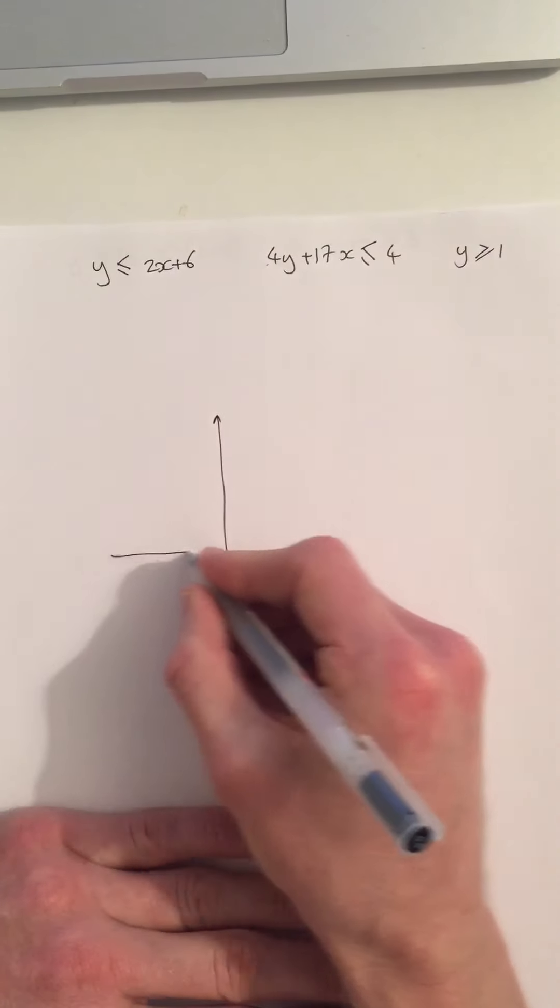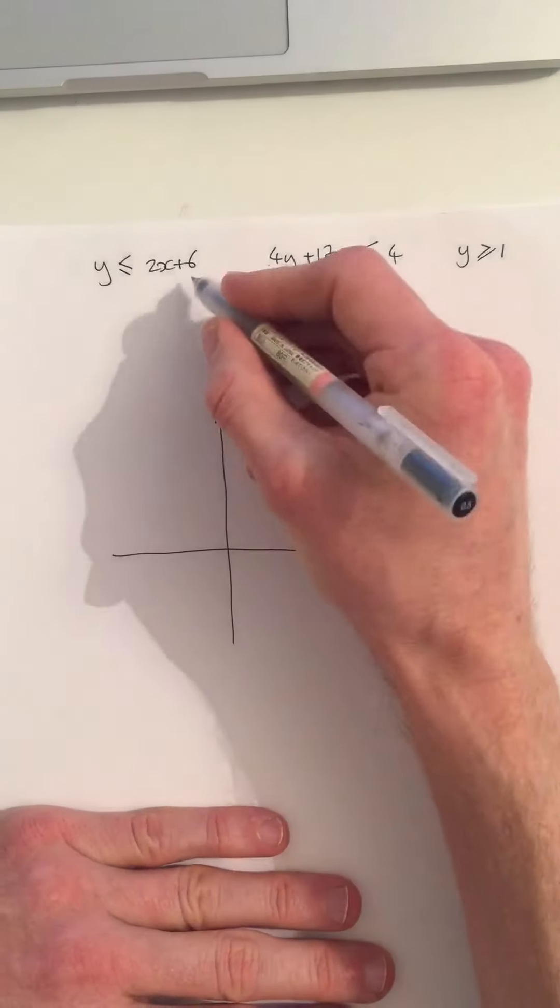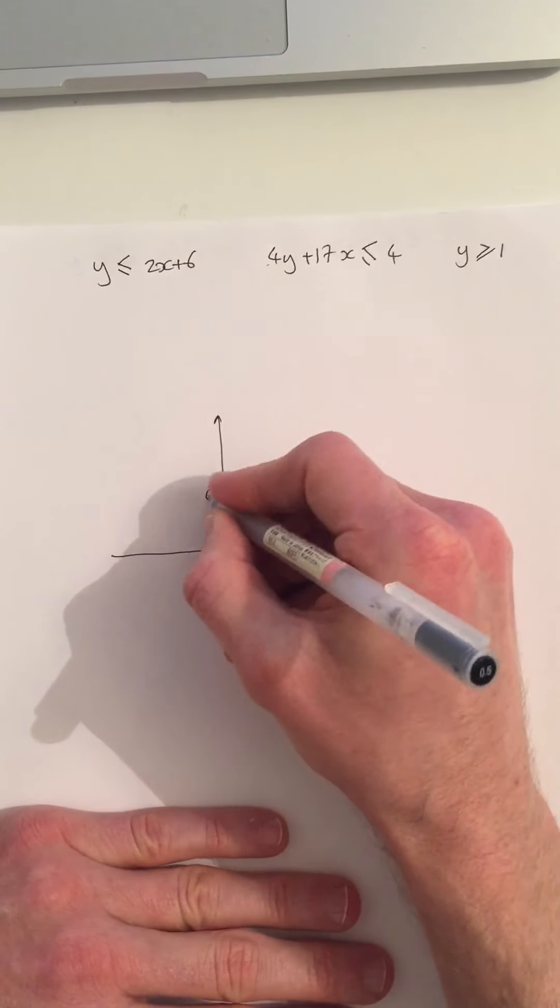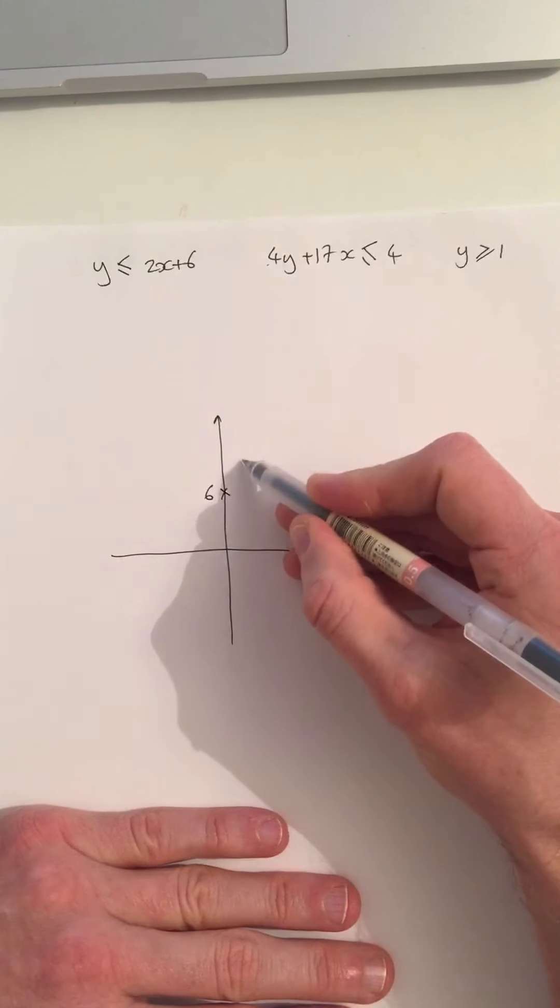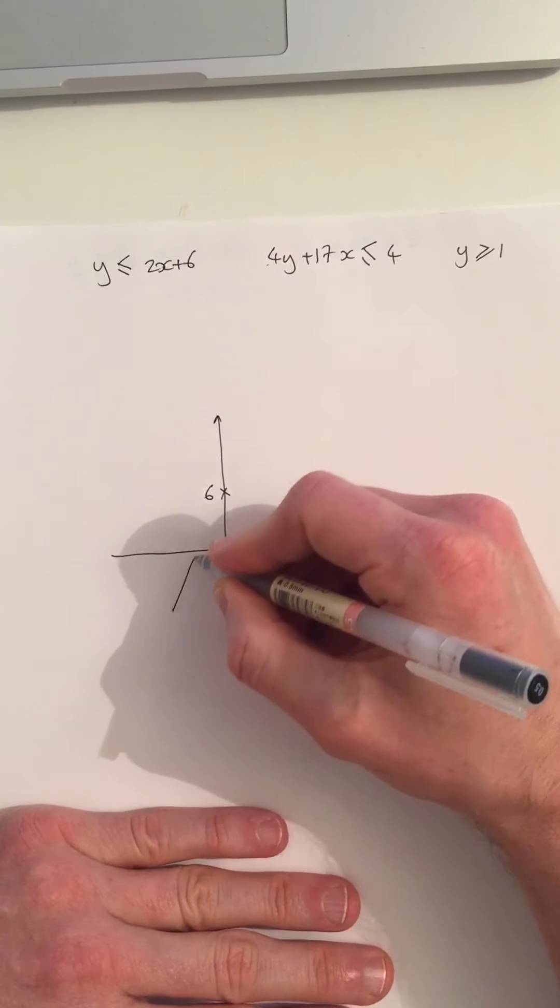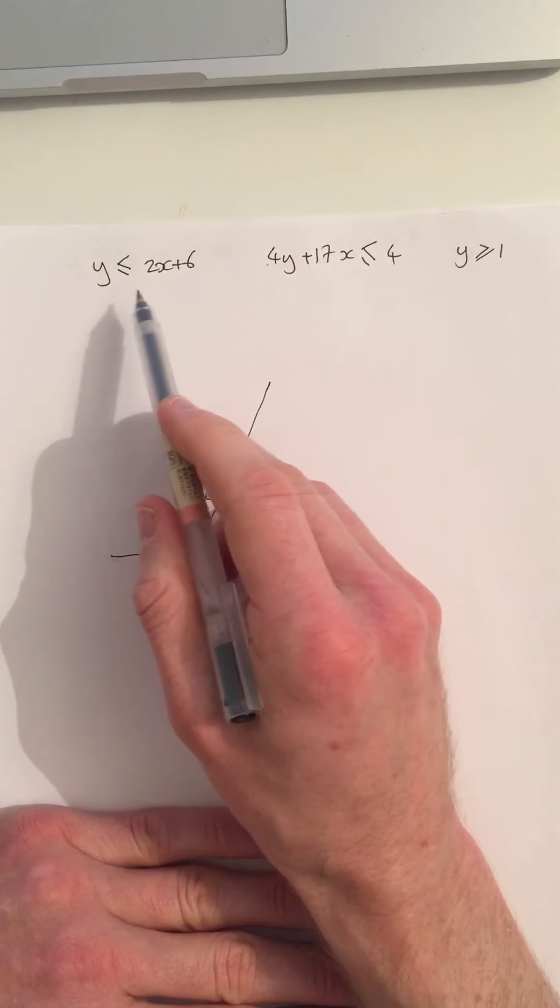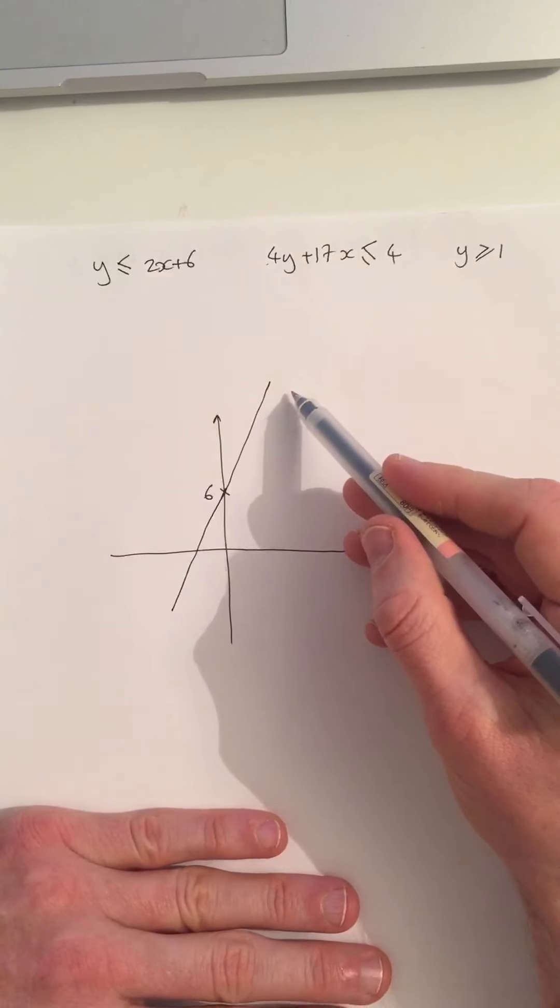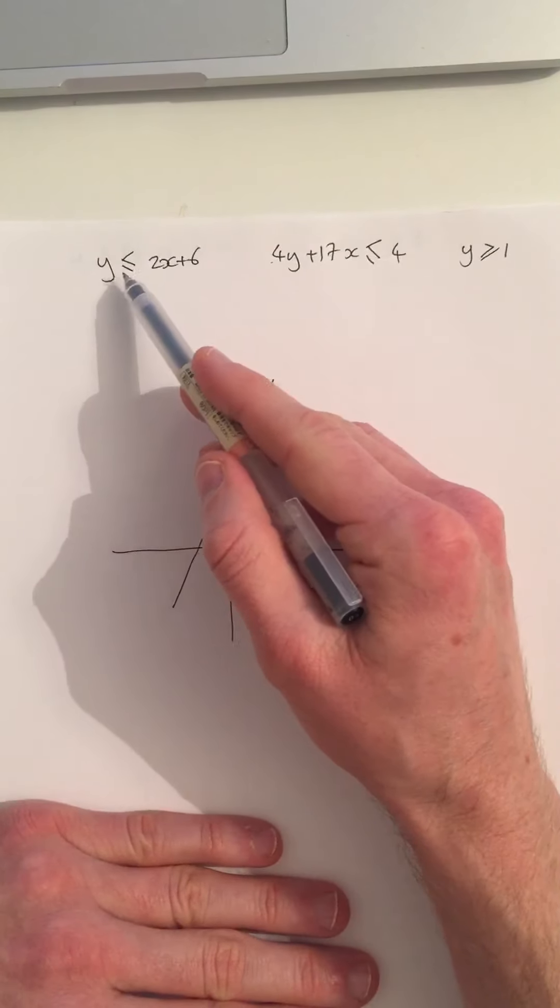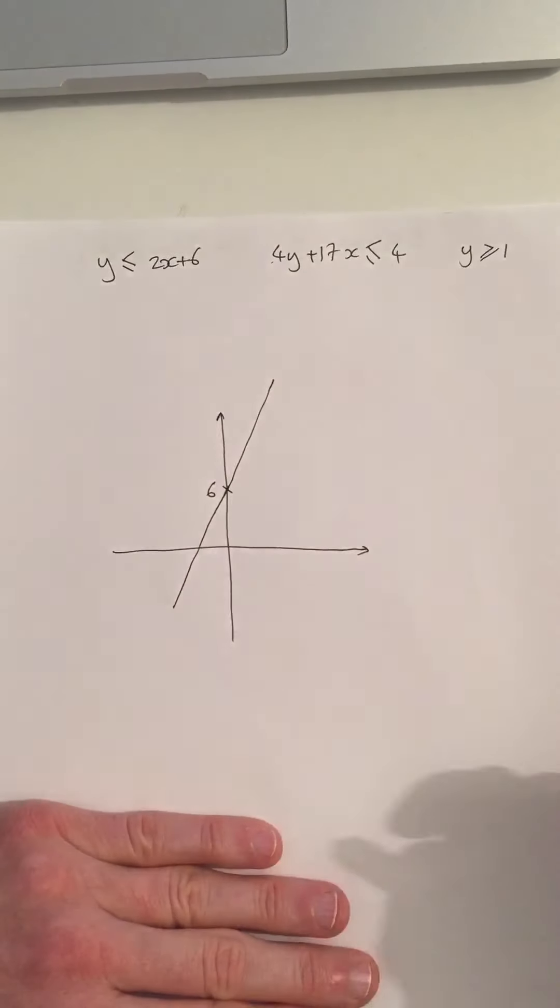So let's just draw this very roughly. It's got a y-intercept of 6 and a gradient of 2, so along one up 2. So it's going to look something like this. So this is the line where y equals 2x plus 6. And I obviously want everything that's below or equal to it, so everything below that line.